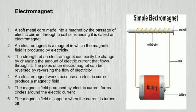The poles of an electromagnet can even be reversed by reversing the flow of electricity. An electromagnet works because an electric current produces a magnetic field. The magnetic field produced by electric current forms circles around the electric current. The magnetic field disappears when the electric current is turned off.